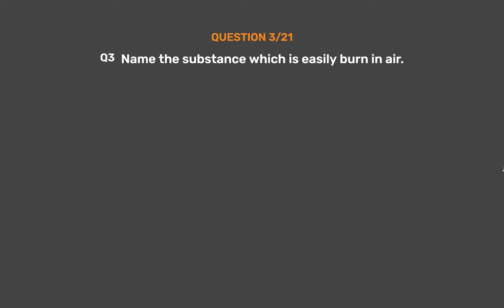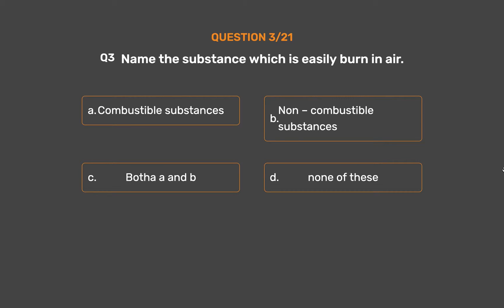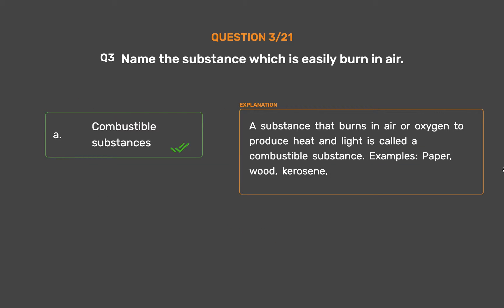Question number 3: Name the substance which easily burns in air. Option A: Combustible substances. Option B: Non-combustible substances. Option C: Both A and B. Option D: None of these. The correct answer is Option A: Combustible substances. A substance that burns in air or oxygen to produce heat and light is called a combustible substance. Examples: paper, wood, kerosene.